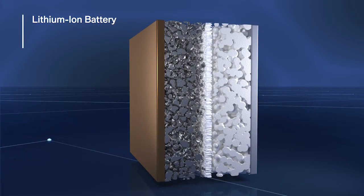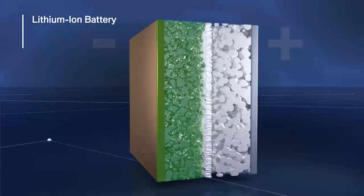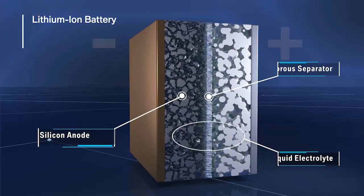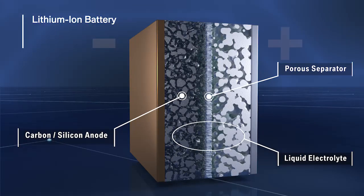Today's batteries are based on lithium-ion technology composed of two electrodes: cathode, anode, and a porous separator. A liquid electrolyte allows the lithium-ion transfer and thus the flow of current.